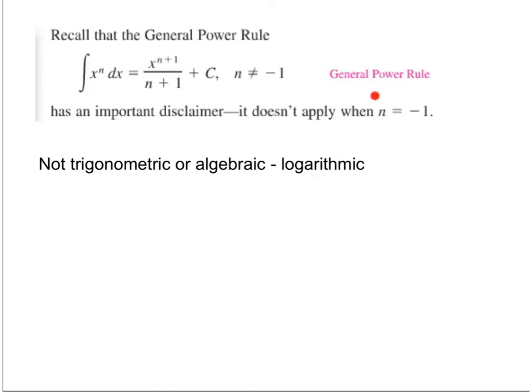The general power rule does not apply when n is negative 1. Think about what that means. If you had negative 1 plus 1, that would be 0 over 0, and we cannot divide by 0. That's why that exclusion exists. We need help from a function that is not trigonometric or algebraic. We need a logarithmic function.